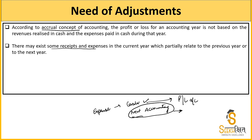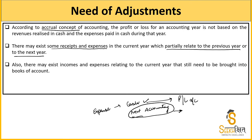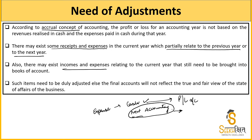There may exist some receipts and expenses in the current year which partially relate to the previous year and next year। कुछ ऐसी receipts या expenses हो सकते हैं जो इस accounting period के नहीं, बल्कि पिछले या अगले period के हैं — उन entries को भी adjust करना पड़ेगा ताकि सिर्फ इसी accounting period की transactions record हों और financial statements का true and fair view मिल पाए।